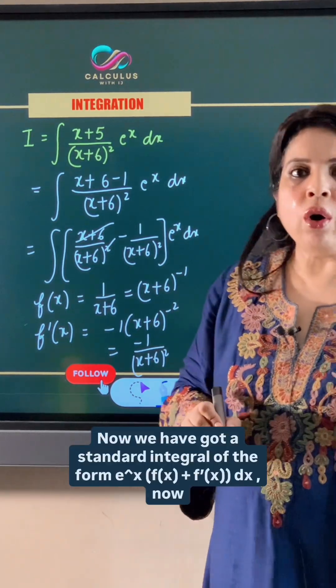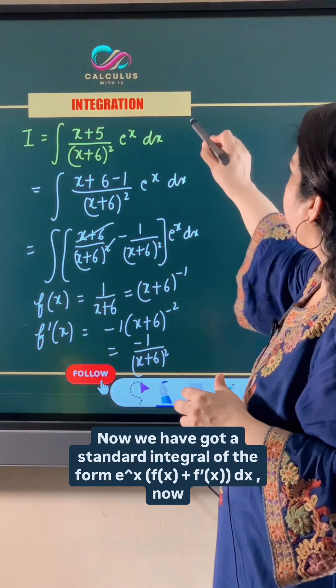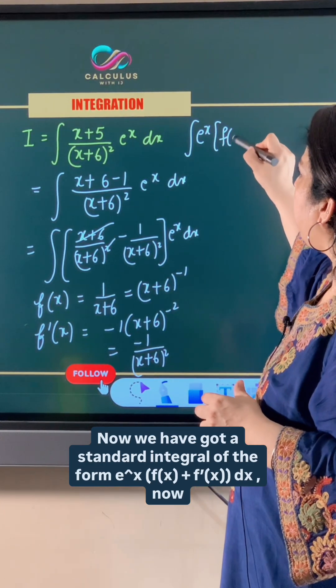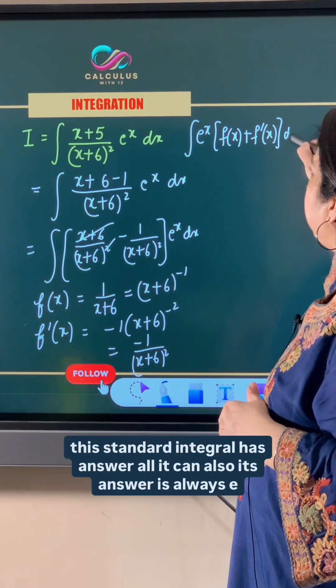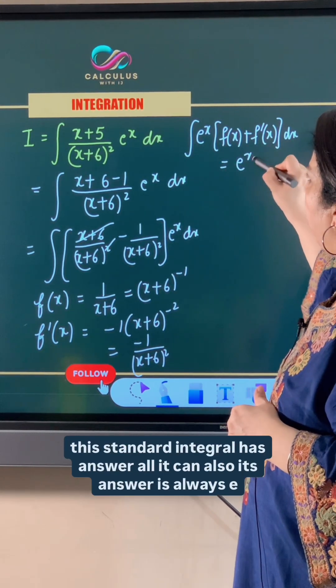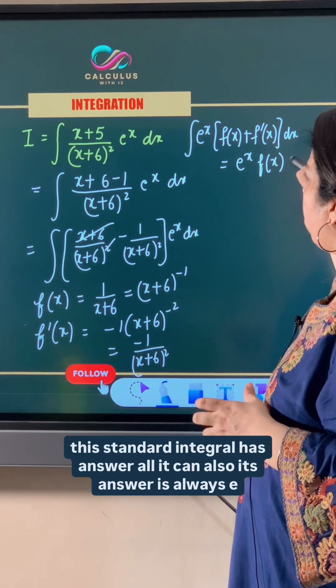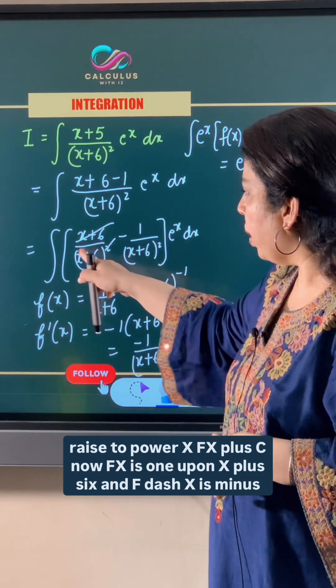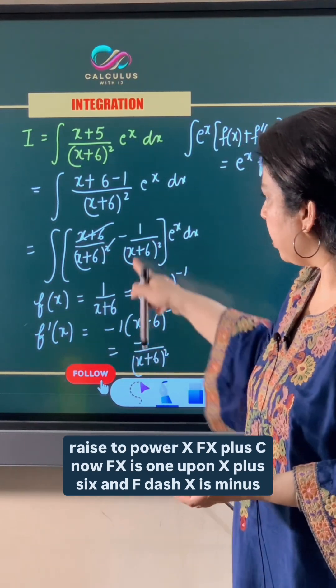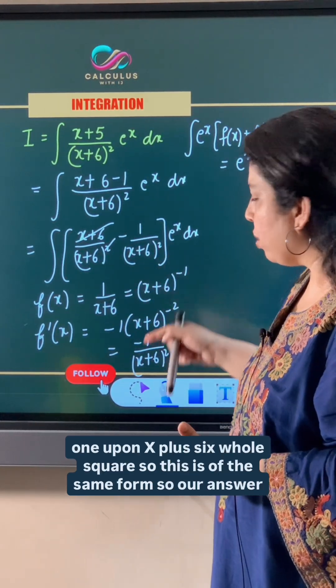Now we have got a standard integral of the form e x fx plus f dash x dx. This standard integral has answer, its answer is always e raised to power x fx plus c. Now fx is 1 upon x plus 6 and f dash x is minus 1 upon x plus 6 whole square. So this is of the same form.